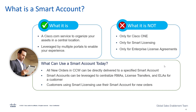The key fundamental aspect around which smart licensing is built is the smart account. The smart account is a Cisco.com service that helps you organize your assets in a centralized location, and it is leveraged by multiple portals to enable multiple experiences. You can use your smart account today to place orders in CCW and have those orders delivered directly to your specified smart account.